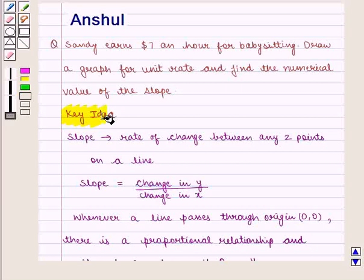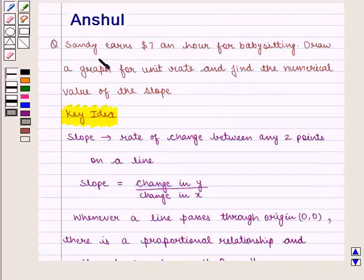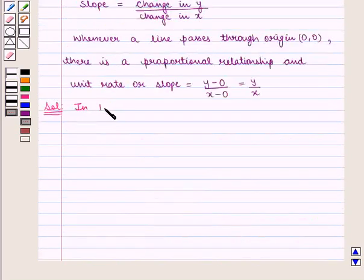With this key idea, we shall proceed to the solution. In this question, we have to draw a graph of the given statement that Sandy earns $7 an hour for babysitting. That is, Sandy earns $7 in 1 hour.